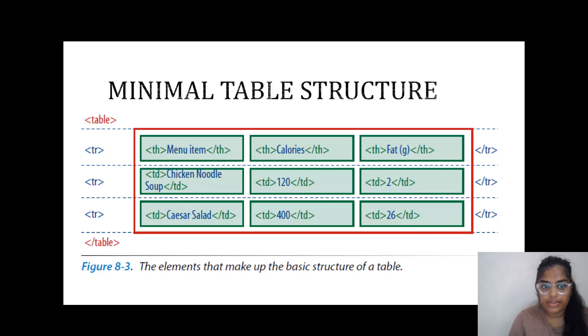Here we can see TR is given as a starting tag where the row is created, and TH is the heading of the particular row. Every tag is closed with a closing tag - slash TH, slash TR.